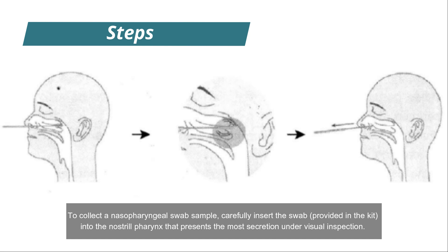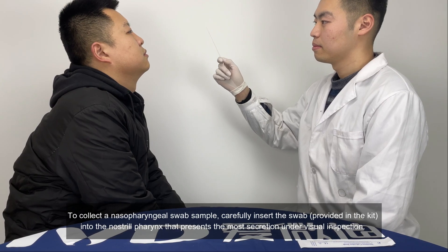To collect a nasopharyngeal swab sample, carefully insert the swab provided in the kit into the nostril that presents the most secretion under visual inspection.